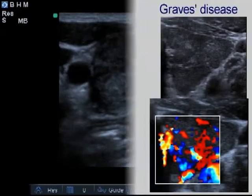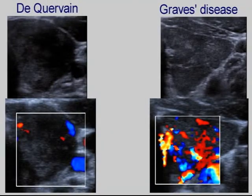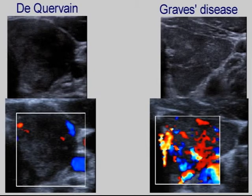Compare the pictures. On the grayscale mode, hypochogenic areas with blurred borders are demonstrated in the case of thyroiditis. On the Doppler mode, the thyroiditis displays decreased vascularization, while Graves' hyperthyroidism shows increased vascularization.